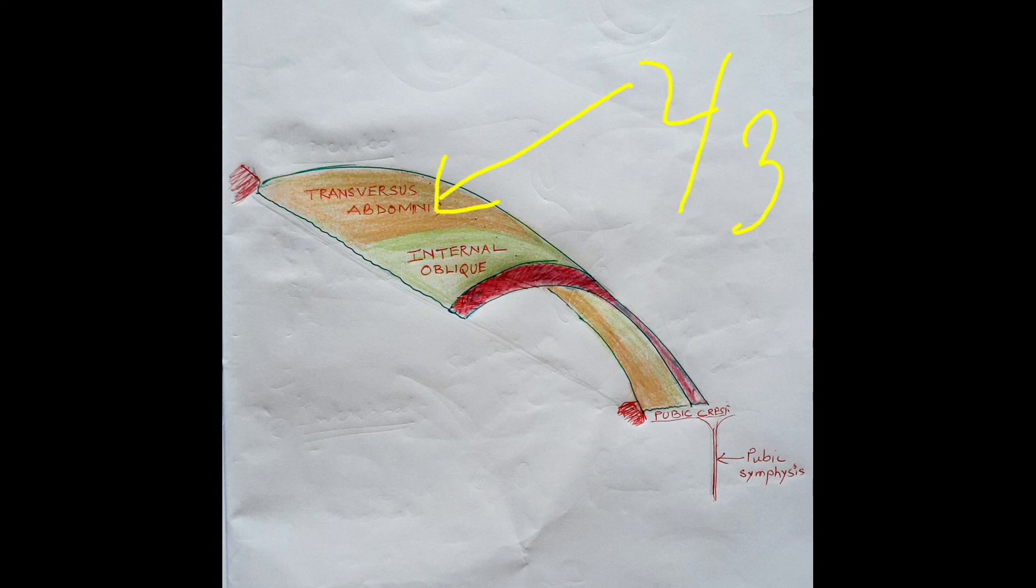Two thirds of the conjoint tendon is formed by the transversus abdominis muscle and one third by the internal oblique muscles.